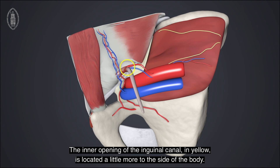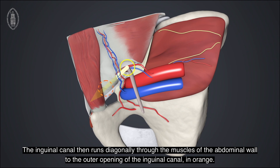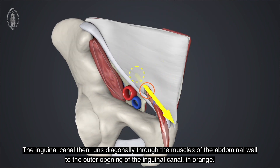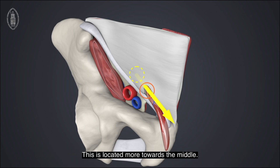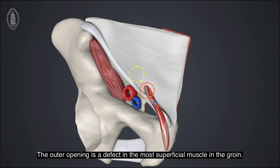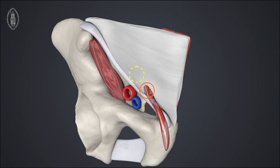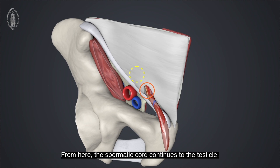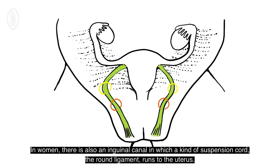The inner opening of the inguinal canal, shown in yellow, is located a little more to the side of the body. The inguinal canal then runs diagonally through the muscles of the abdominal wall to the outer opening of the inguinal canal, shown in orange. This is located more towards the middle. The outer opening is a defect in the most superficial muscle in the groin. From here, the spermatic cord continues to the testicle. In women, there is also an inguinal canal in which a kind of suspension cord, the round ligament, runs to the uterus.